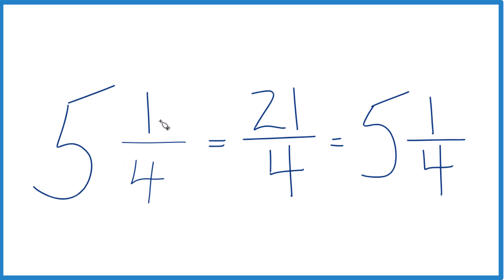That's what we started with. And know that these are equal. They have the same value, 5 and 1 fourths and 21 fourths. They're equal.